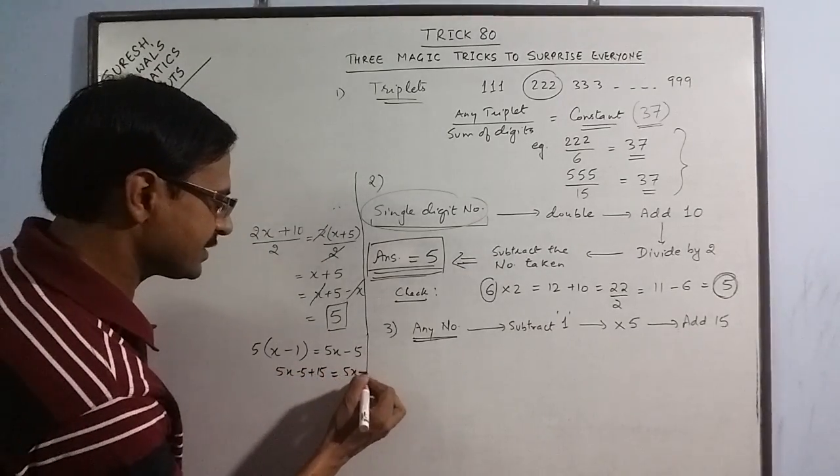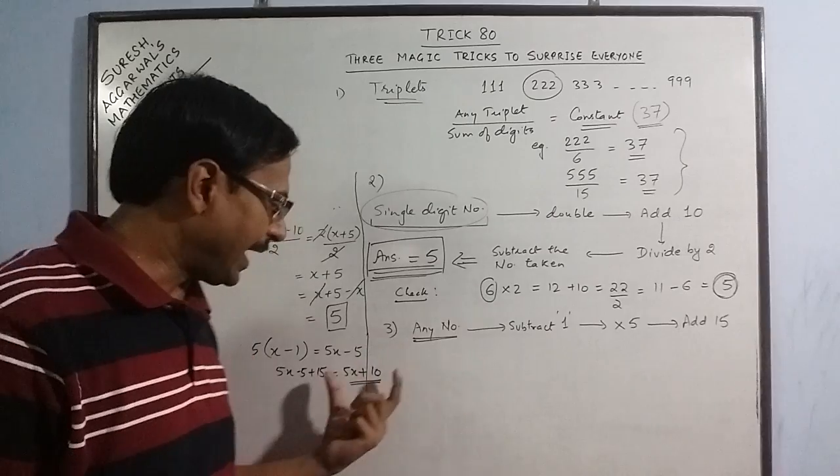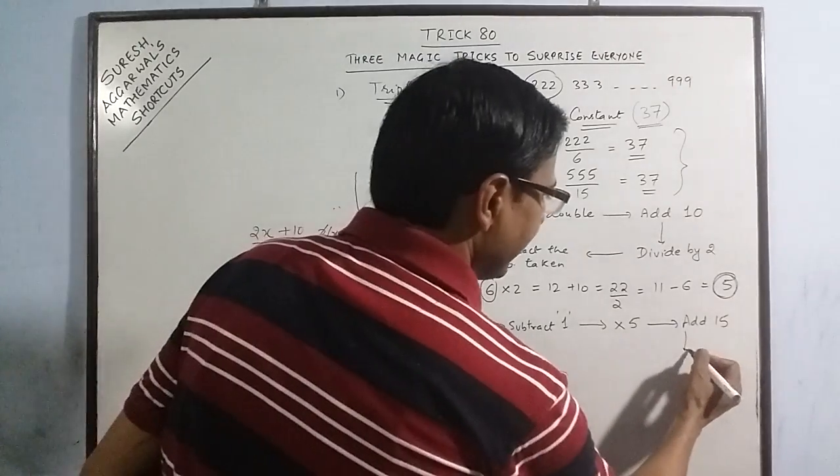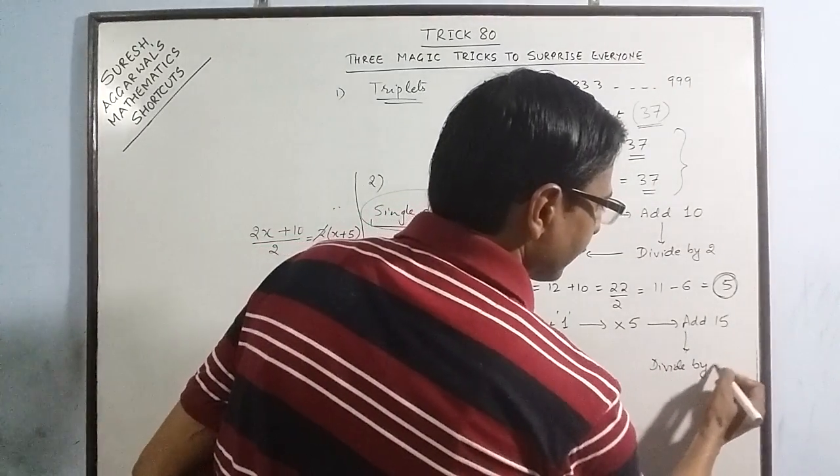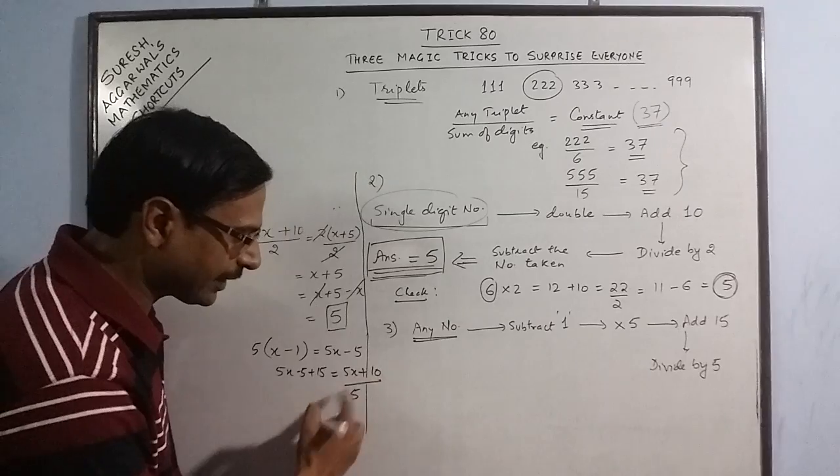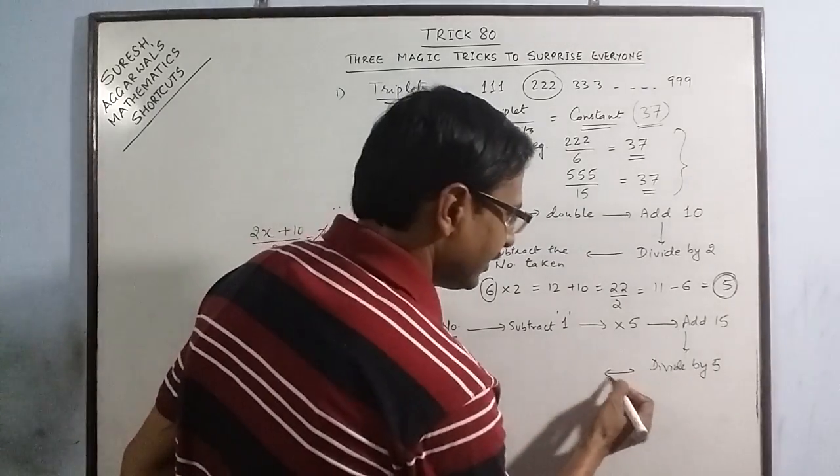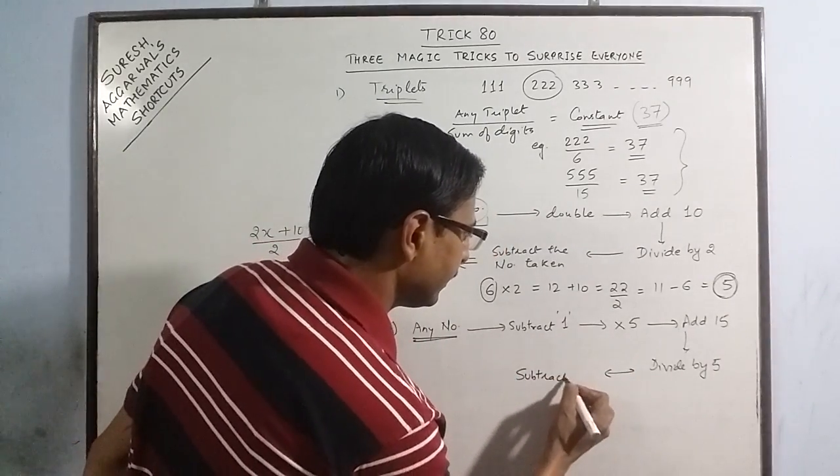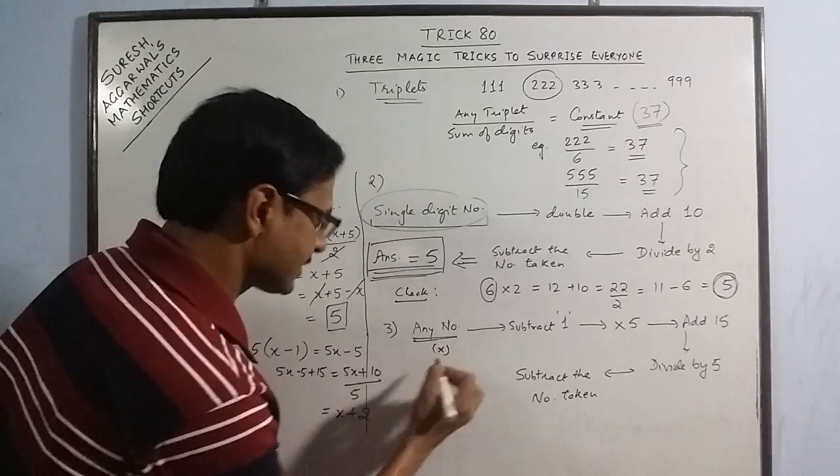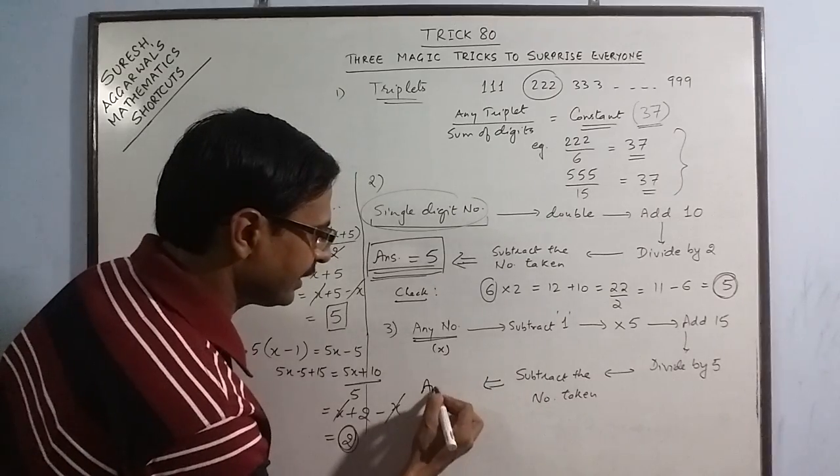Now within your heart you know that the person who is performing this has the answer as 5x plus 10. Now you just make him divide it by 5. So if we divide this 5x plus 10 by 5, obviously 5 will cancel out as a common factor, so the answer will be x plus 2. And now ask him to subtract the number taken. So if we subtract the number taken—and he took the number as x—so he will subtract x and he will get the answer as 2. So just tell him that whatever he has got is 2.